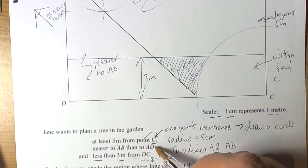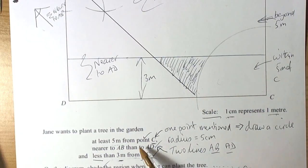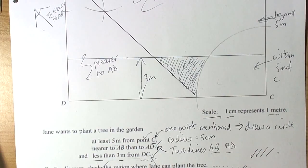As usual, we should tick off everything to make sure we've done it all. We've shaded. So we've done at least five metres, we've got nearer to AB than AD, we've gone less than three metres from DC, and we've shaded the region they actually wanted. That should give us all the marks. That's how that kind of question can be done. Loci and constructions - practice them.